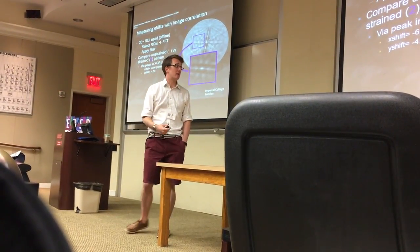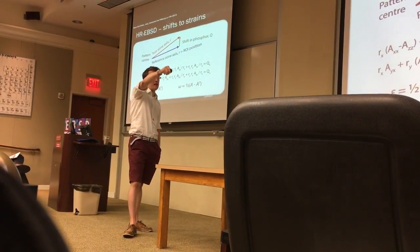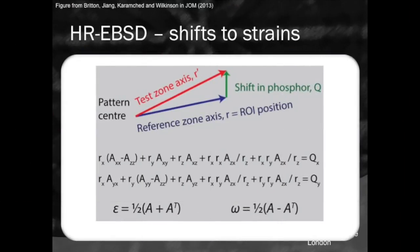Why do I need sub-pixel precision? Because the shift on the phosphor is related to components of my strain tensor and how far my sample is from the detector. If I have 1000 pixels and only 1-pixel sensitivity, I won't get 10 to the minus 4 strain — a 1-pixel deviation gives you 10 to the minus 3. A tenth-of-a-pixel deviation gives you 10 to the minus 4. A little math relates the position of measurements to shifts on the diffraction pattern, extracting strain tensor components A_X, A_Y, etc.